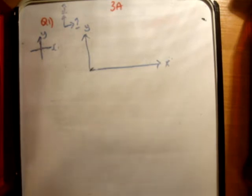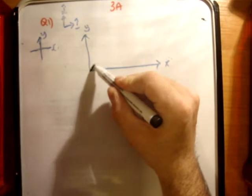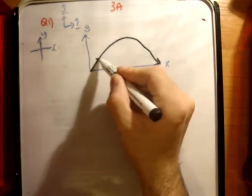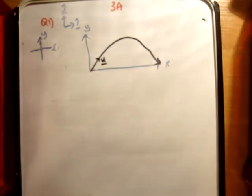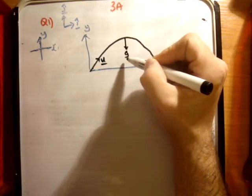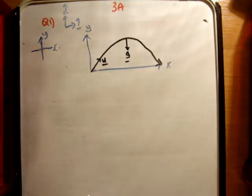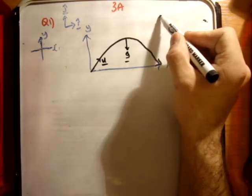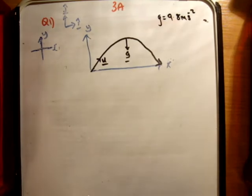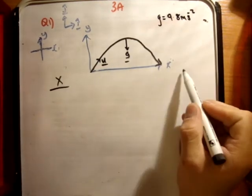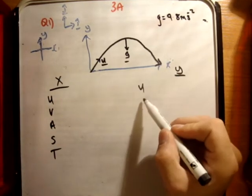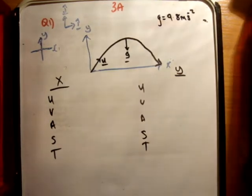We're told it is a projectile, so it will fire from an initial point, go into the air, and drop down. I'm going to say that this here is the vector u — that's the initial speed. We're going to define gravity here. Gravity is also a vector because it is an acceleration, and g is approximately 9.8 meters per second squared. We need to define u, v, a, s, t for both the x-axis and the y-axis.